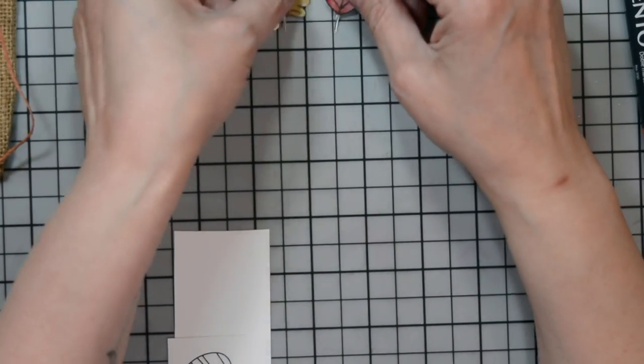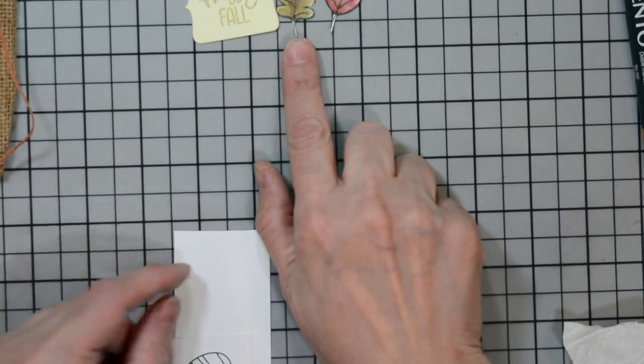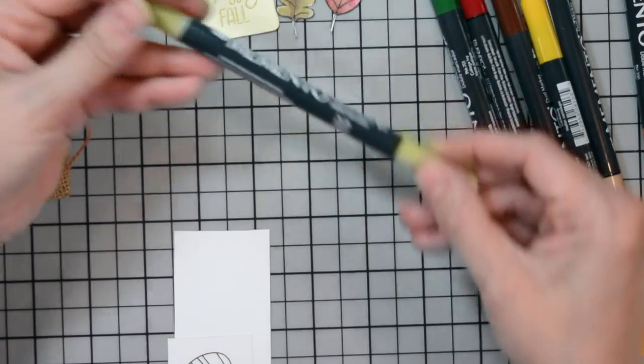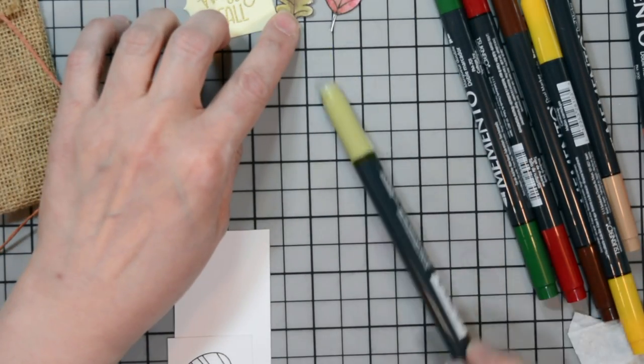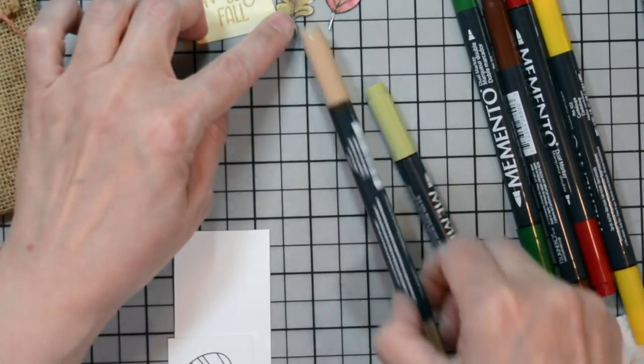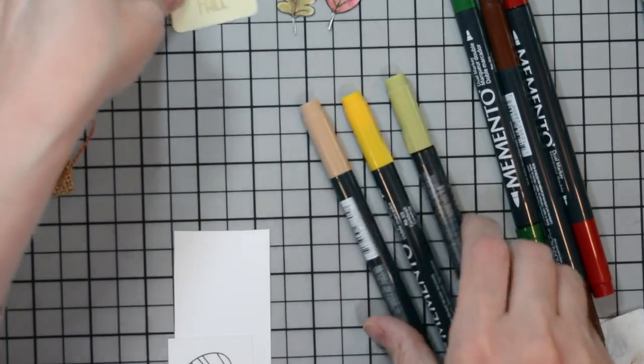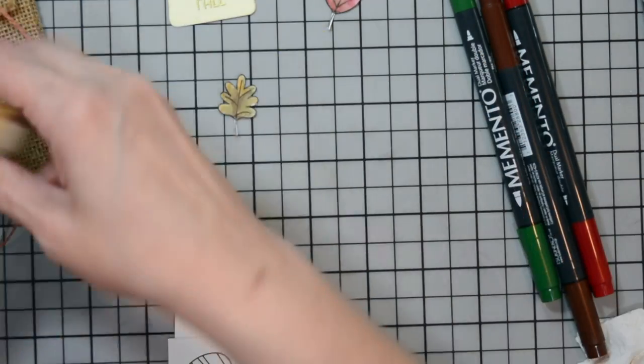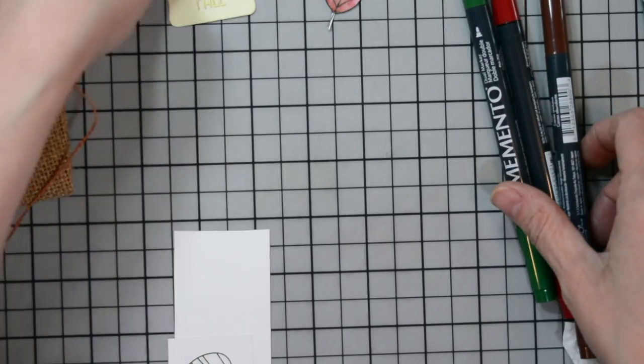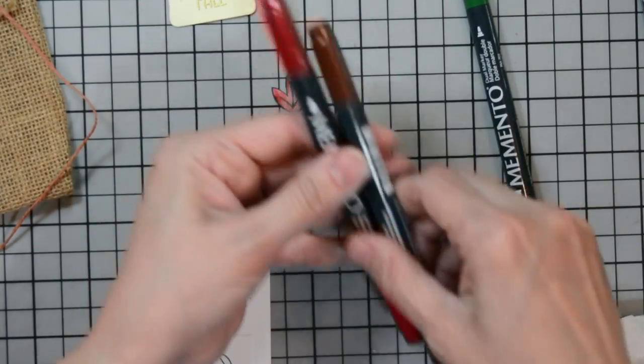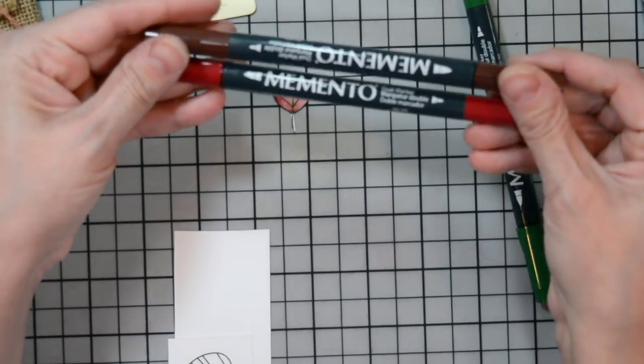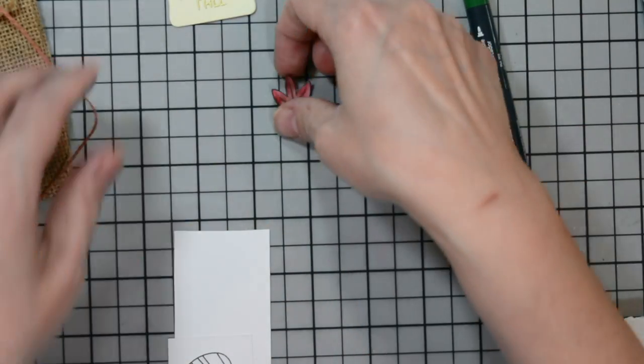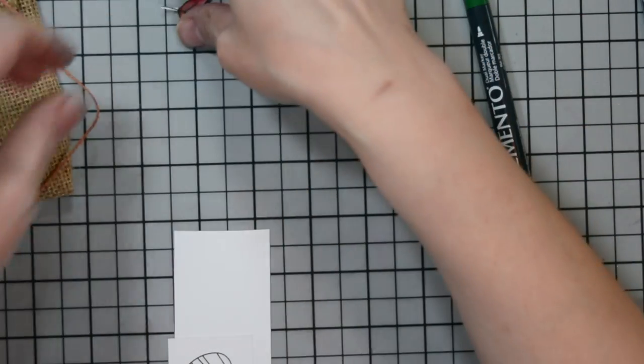Our leaves, I went ahead and stamped and colored them using the same technique we did earlier. I used my Memento markers to do so. For our green leaf, we used pistachio, toffee crunch, and cantaloupe. For our red leaf, we use rhubarb stark and rich cocoa. And for our green leaf, we're going to use cottage ivy.